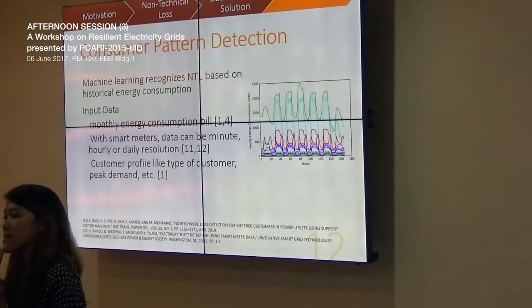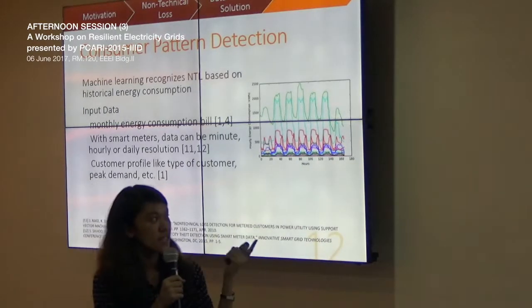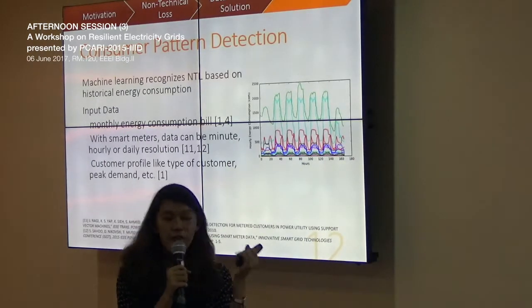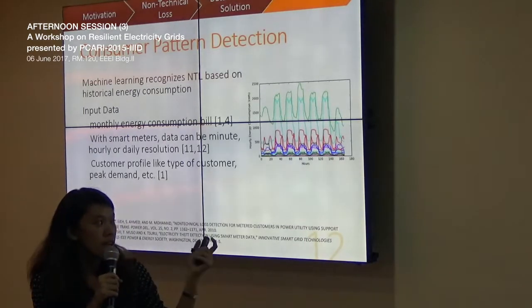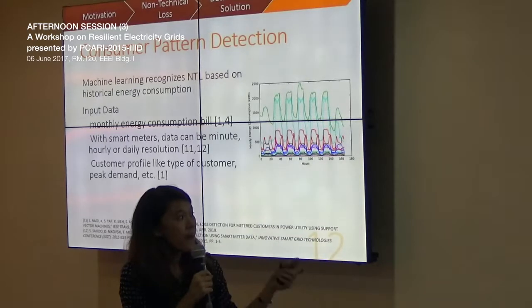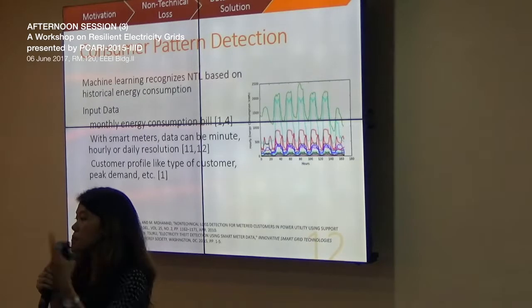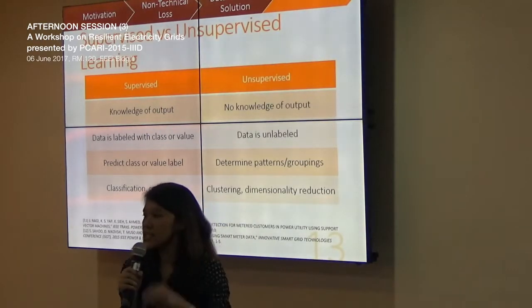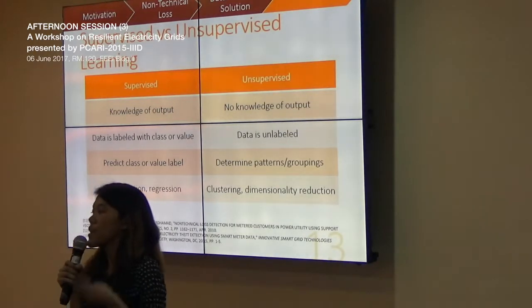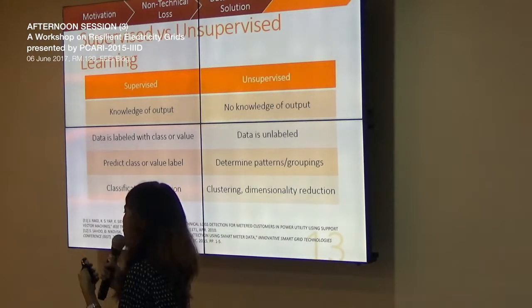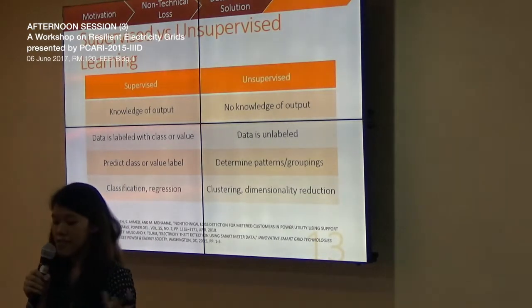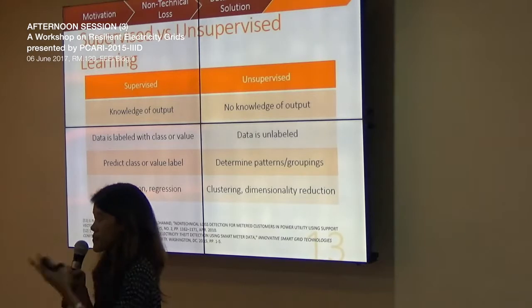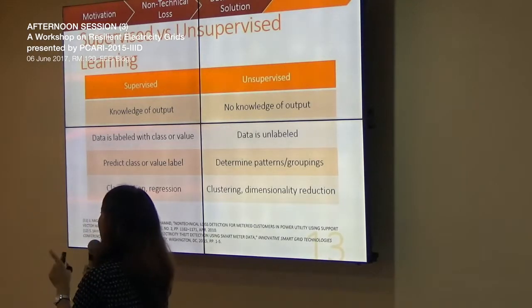Consumer pattern detection uses machine learning to recognize energy consumption based on historical data — monthly energy consumption billing, or smart meter readings at minute or daily resolution — along with other features such as type of customer, peak demand, minimum/maximum per month. In machine learning, there are two types of approaches: supervised and unsupervised. With supervised learning, we know the desired output — classifying a load profile as theft or not theft. With unsupervised learning, if we don't know which customers have a history of theft, clustering algorithms can segregate the data to identify groups corresponding to normal or anomalous customers.